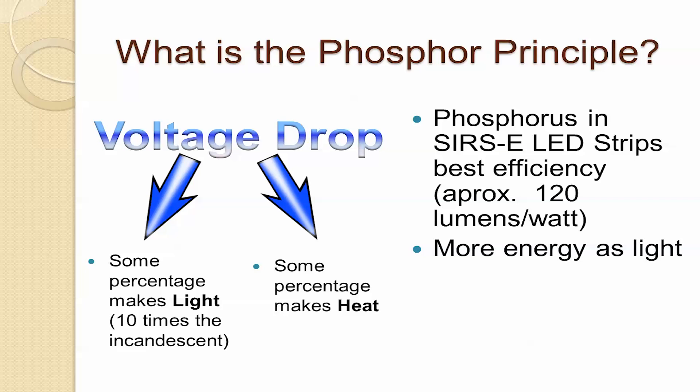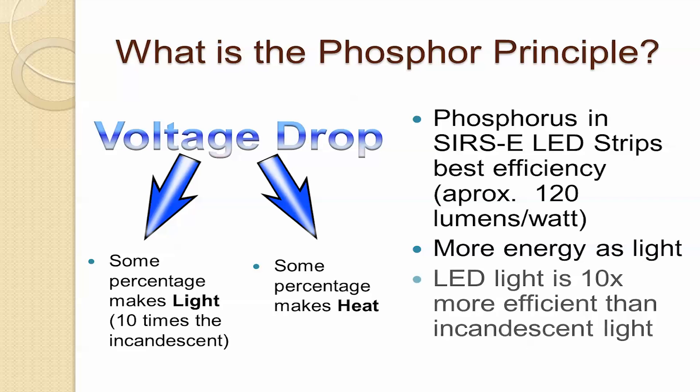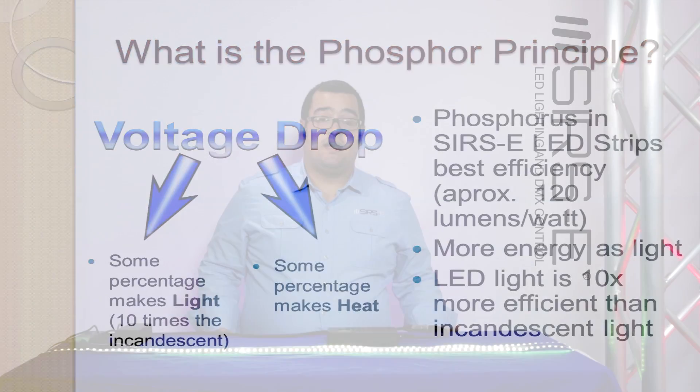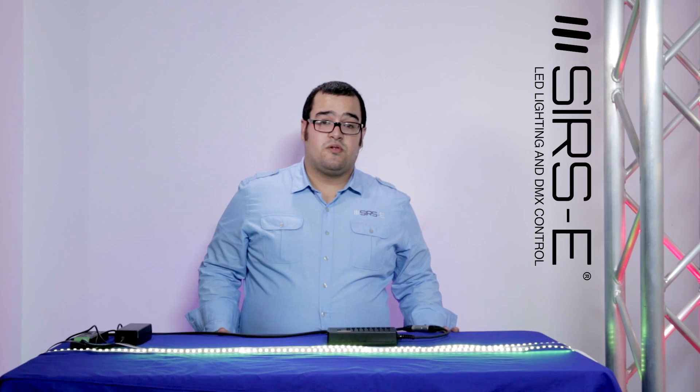It's about 120 lumens per watt, so we can share more energy as light rather than heat. If we use LEDs, we need to choose the most efficient phosphor in the market; otherwise, we're using a phosphor similar in efficiency to the incandescent one by Thomas Edison.